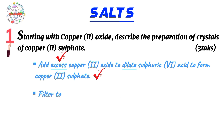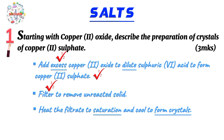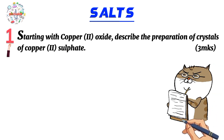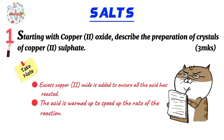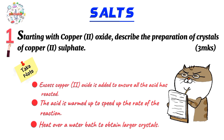Step two: filter to remove any unreacted copper(II) oxide. Step three: heat the filtrate — which contains copper(II) sulfate solution — to saturation and cool to form crystals. Step four: dry the crystals between filter papers. Note that excess copper(II) oxide is used to ensure all the acid has reacted. The acid may also be warmed to speed up the rate of reaction, since the reaction between copper(II) oxide and sulfuric acid is relatively slow. It is also better to carry out evaporation over a water bath, as this leads to the formation of larger crystals.